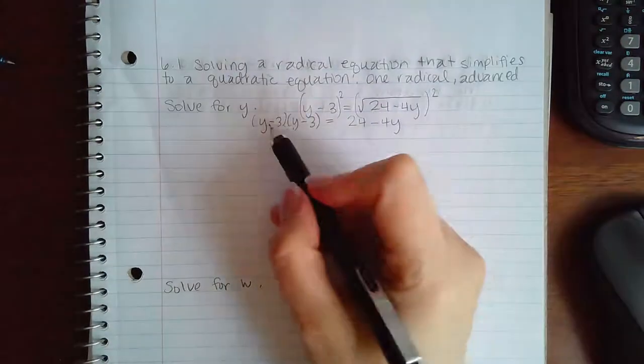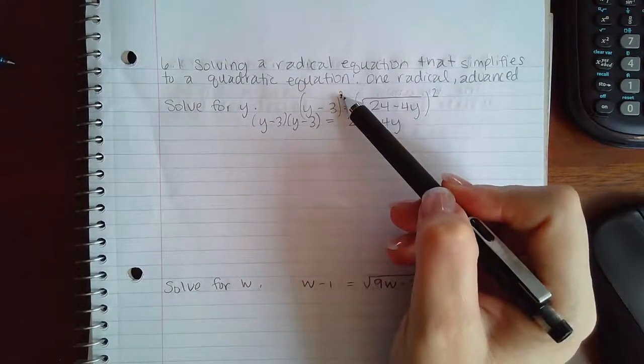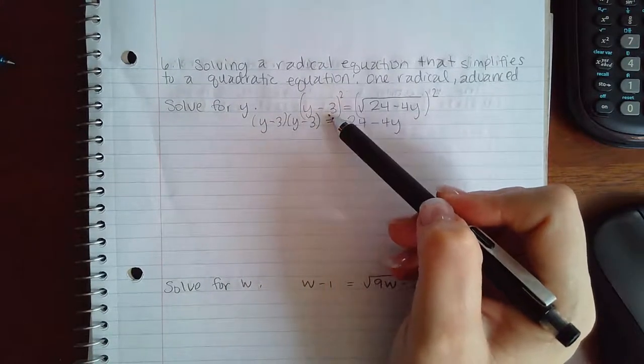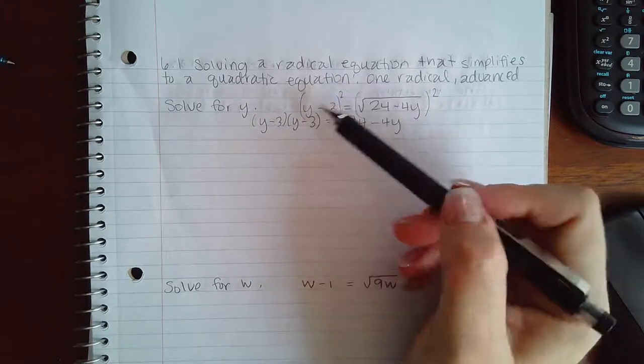And over here I have to actually FOIL this out. Be very careful not to just say it's y squared minus 9 because that is incorrect. A square means this thing times itself.